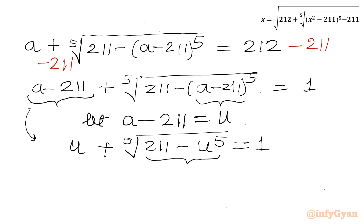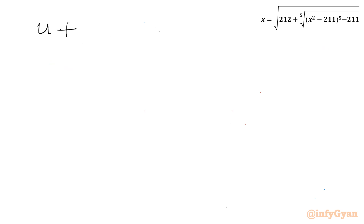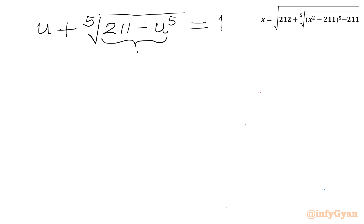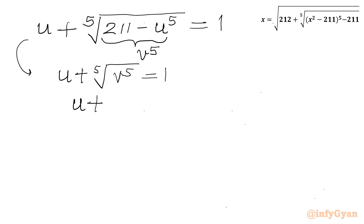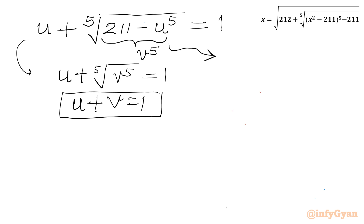Now I will consider the radicand equal to v⁵, so 211 − u⁵ = v⁵. This gives us two equations: Equation 1: u + v = 1, and Equation 2: u⁵ + v⁵ = 211.